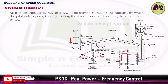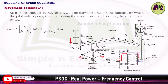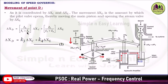Movement of point D: del_Xd is contributed by del_Xc as well as del_Xe. del_Xd is the amount by which the pilot valve opens, thereby moving the main piston and opening the steam valve. So del_Xd = (l4/(l3+l4))·del_Xe + (l3/(l3+l4))·del_Xe, where l4/(l3+l4) = K3 and l3/(l3+l4) = K4. Take this as Equation 2.